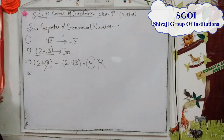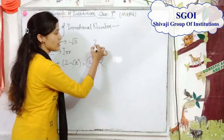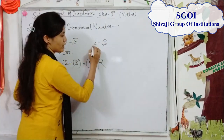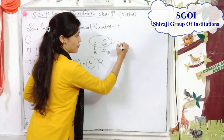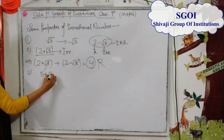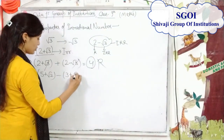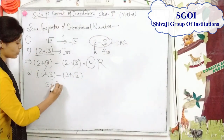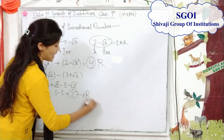Similarly, the difference of two irrational numbers need not be an irrational number. For example, (5 plus root 2) minus (3 plus root 2) gives us 5 plus root 2 minus 3 minus root 2, which equals 2, and 2 is a rational number.